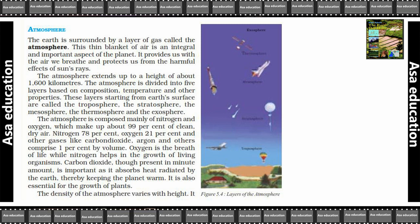Ab yeh jo atmosphere hai, is mein mainly nitrogen aur oxygen hai jis ki wajay se hume lag-bhag 99% clean, yani saaf aur sookhi hawa milti hai. Nitrogen 78%, oxygen 21%, and other gases like carbon dioxide, argon and others comprise 1% by volume. Sabse zyada hai nitrogen 78%, uske baad 21% oxygen, aur phir baaki gases aati hai jo lag-bhag 1% volume ka hissa cover karti hai — us mein aati hai carbon dioxide, argon, and other gases.